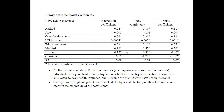Notice one very interesting thing: these coefficients differ by scale factor. Looking at 0.4, 0.19, and 0.11, you cannot say that being retired has the highest effect using the logit model because they simply differ by scale based on the functional form. Make sure you do not interpret the magnitude here — you just say more likely or less likely to have insurance.